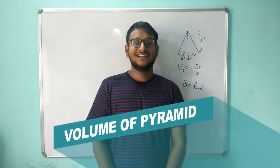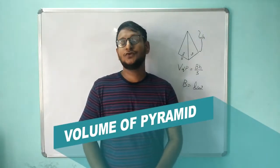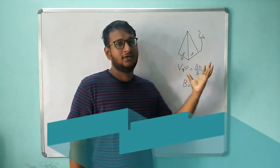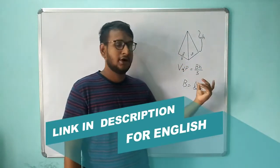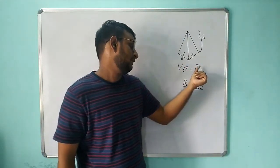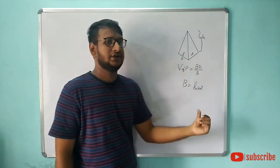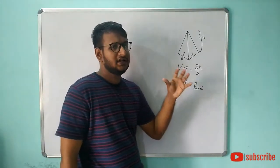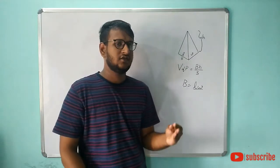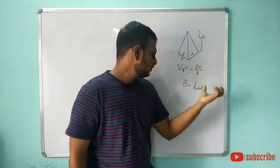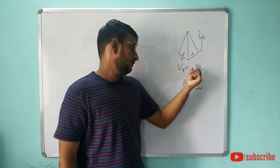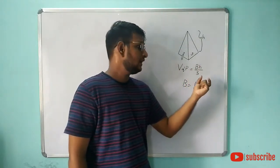Hi guys, welcome to my channel, I am Ram. Today we are going to see about the volume formula for a pyramid. The volume formula of a pyramid is nothing but base times height divided by 3. In this video we will talk about how we derive that same formula.